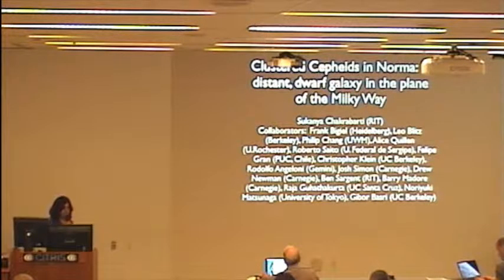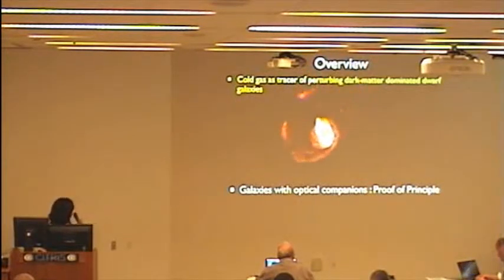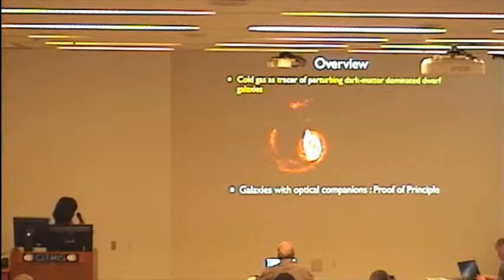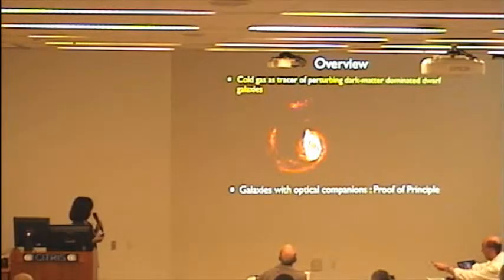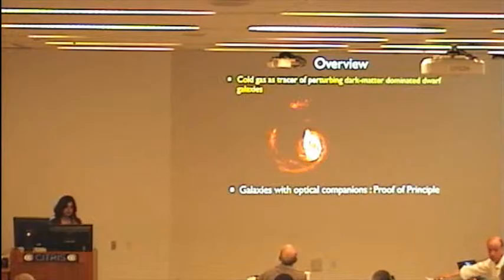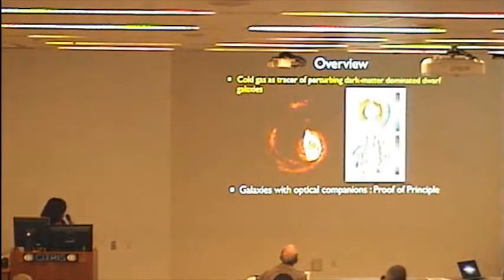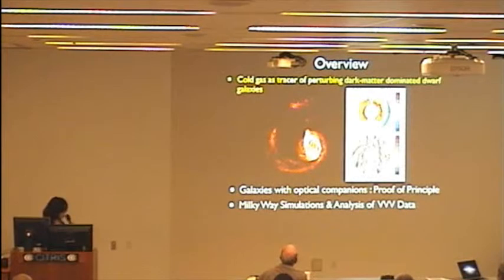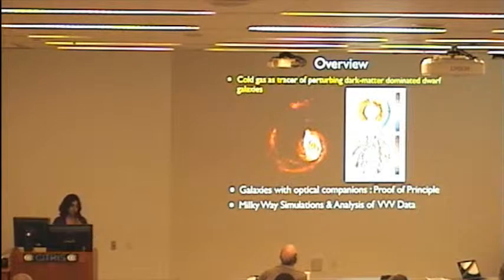I'm going to talk about the recent discovery of clustered Cepheid variables towards the Norma constellation that may mark a dwarf galaxy that I'd predicted several years ago, by using a dynamical analysis of disturbances in the outer gas disk of the Milky Way. The basic idea is to analyze disturbances in the outer H1 disks of spirals.